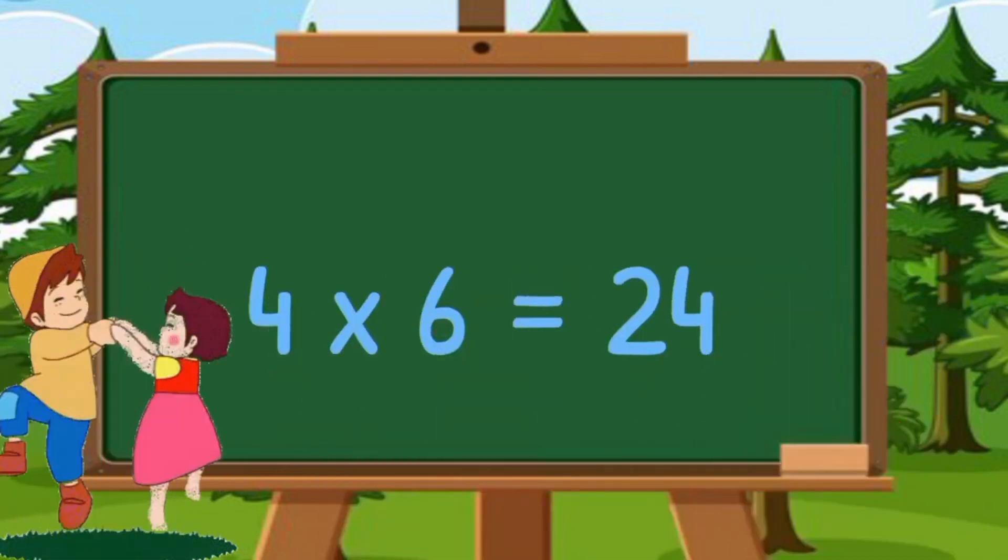Table of 19. 19 1's are 19. 19 2's are 38. 19 3's are 57. 19 4's are 76. 19 5's are 95. 19 6's are 114. 19 7's are 133.